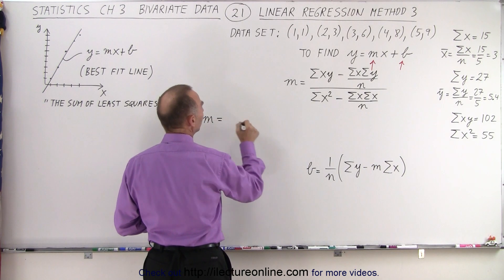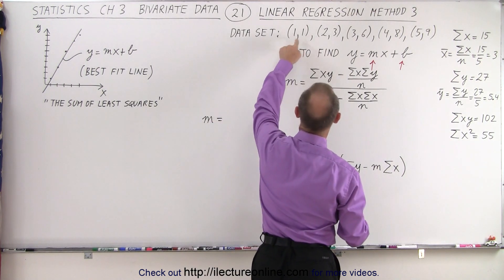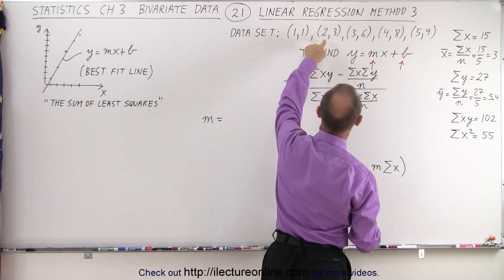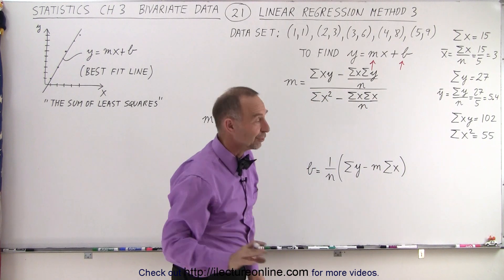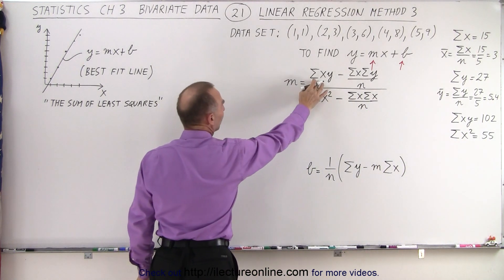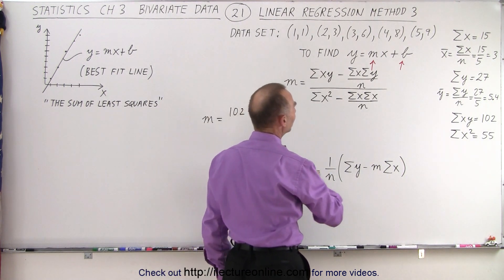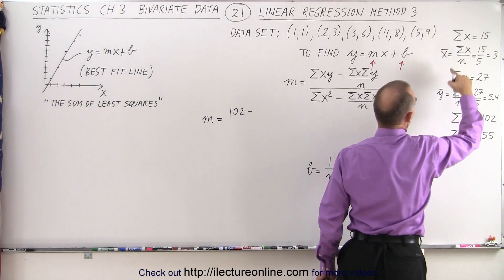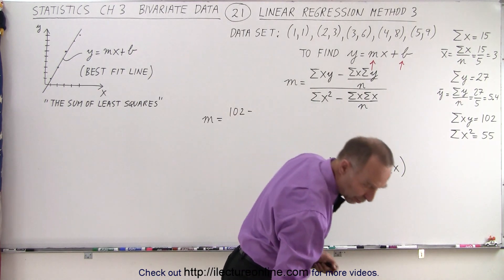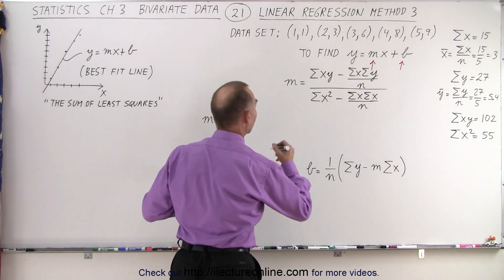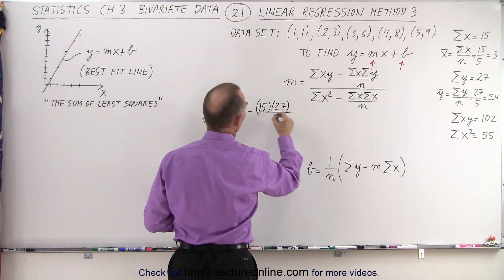The slope m is equal to the sum of the product of x times y's. So we have all the x values and all y values — you multiply those together and add them up. So 1 plus 6 plus 18 plus 32 plus 45 all adds up to 102. The sum of x times y's is equal to 102, minus the sum of all the x's times the sum of all the y's. The sum of all the x's is 15 and the sum of all the y's is 27. So we write it as 15 times 27, divided by the number of data points, which is 5.